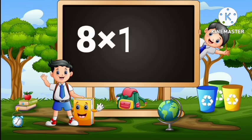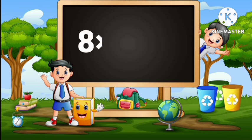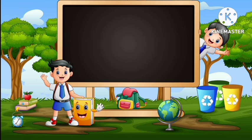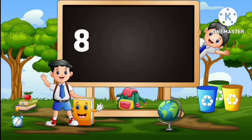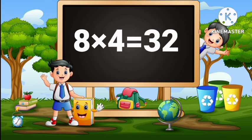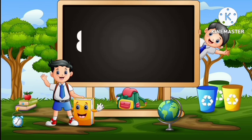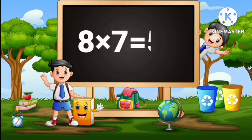Eight ones are eight. Eight twos are sixteen. Eight threes are twenty-four. Eight fours are thirty-two. Eight fives are forty. Eight sixes are forty-eight. Eight sevens are fifty-six.